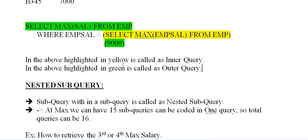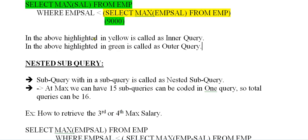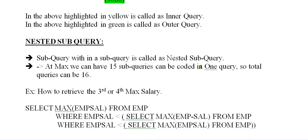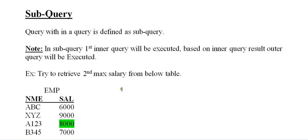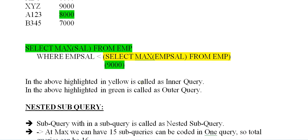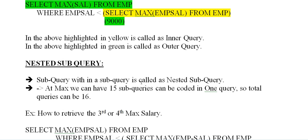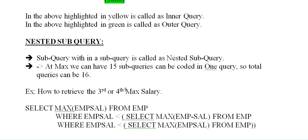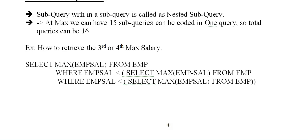A subquery within a subquery is called a nested subquery. At most, 15 subqueries can be coded within one query, making the total 16 levels. To retrieve a third or fourth max salary, we need to write multiple nested subqueries in the same manner.